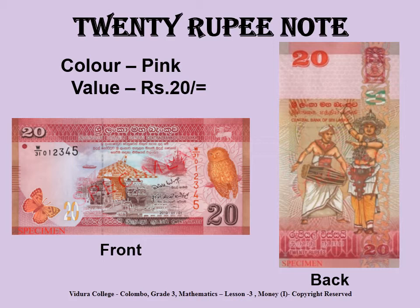Ok children, can you tell me what note is this? It is the 20 rupee note. As you can see, the color of the 20 rupee note is pink and the value is 20. At the center of the front side of the note, you will see a drawing of the Port of Colombo as seen now and in history. The bird that appears on the right hand side of the note is known as the Sri Lanka Serendip Scops Owl.